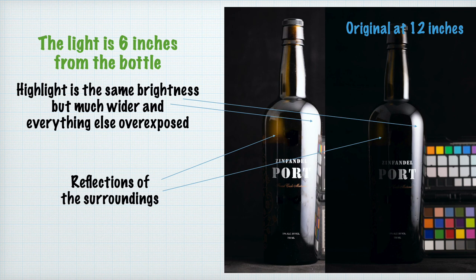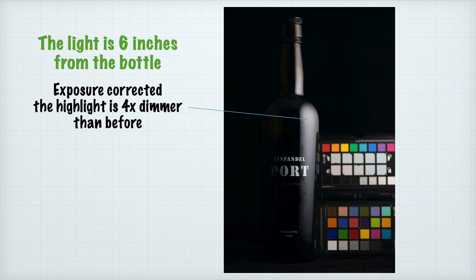To bring the scene back to the proper exposure, I lowered the power of the light two stops so the light source — the softbox — is now 4 times dimmer than it was before. The scene is now exposed properly and the highlight, the direct reflection of the softbox, is now 4 times dimmer than it was.